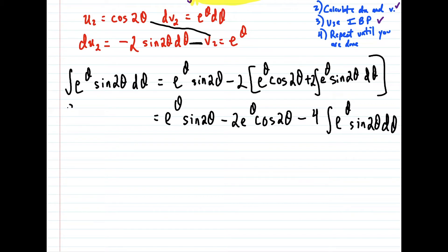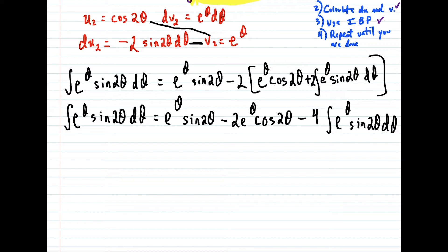And on the left side here, I'm going to just rewrite what we have. It seems like we just went full circle, because notice now we're back at the integral of e to the θ sine 2θ dθ. However, in order for us to solve this, we're going to add this integral to the other side, because these are like terms — these are matching integrals. So we can combine them.